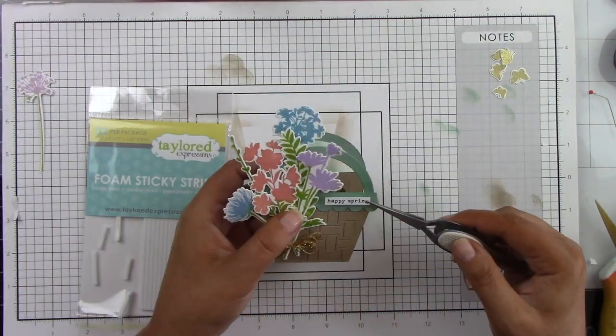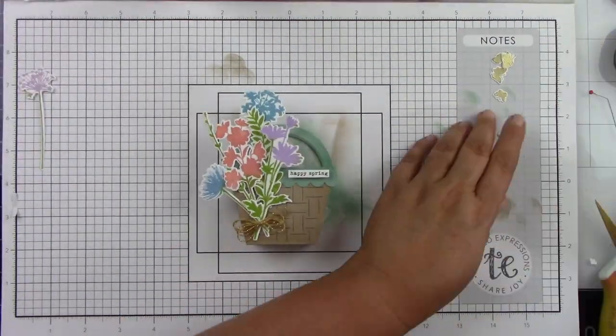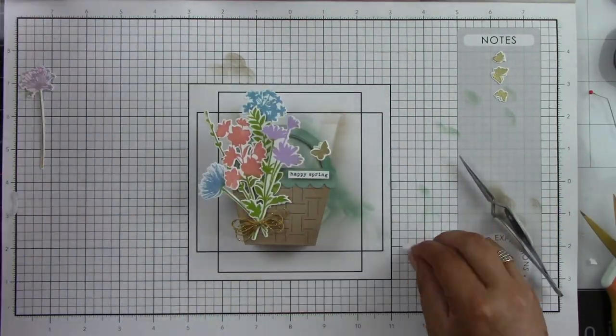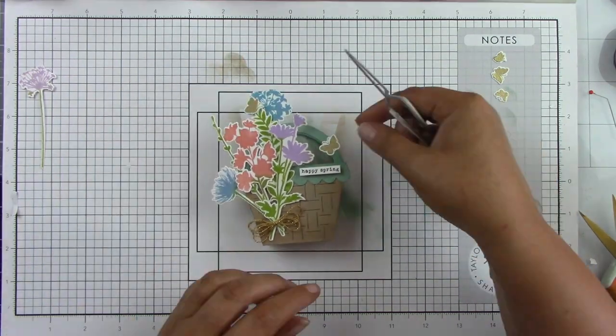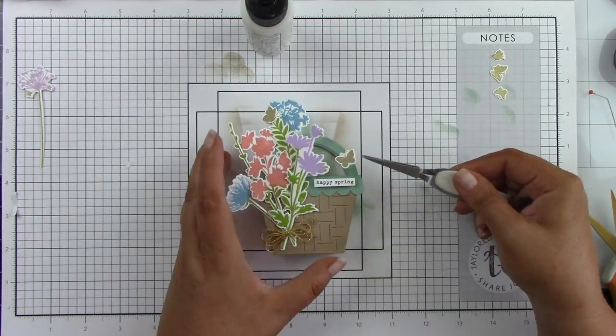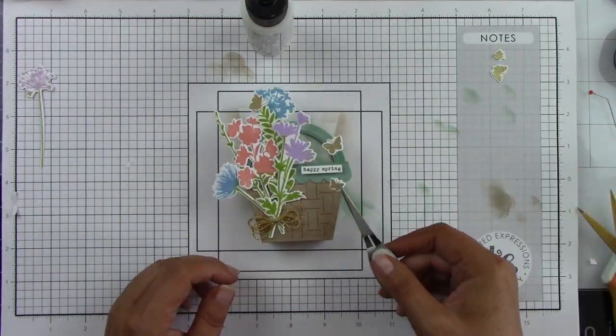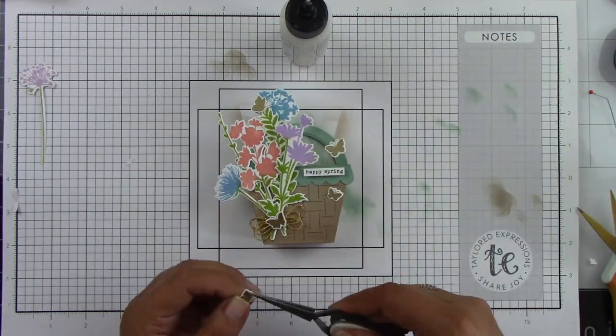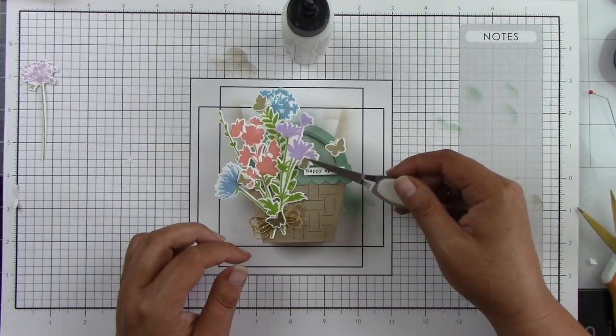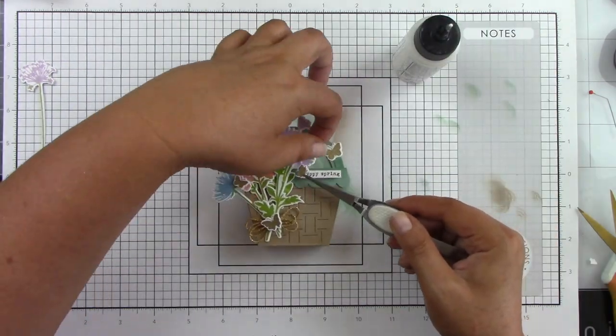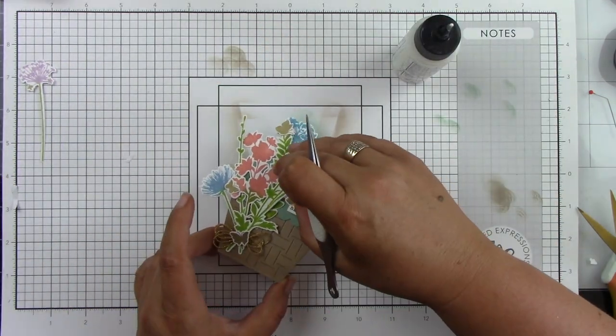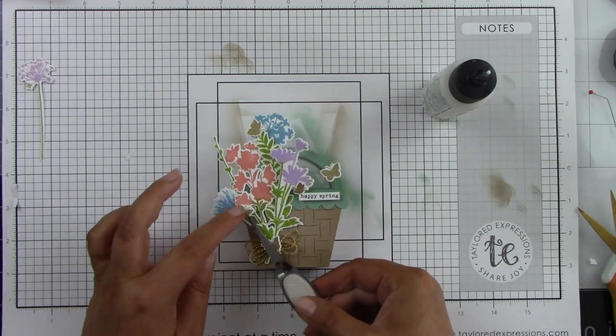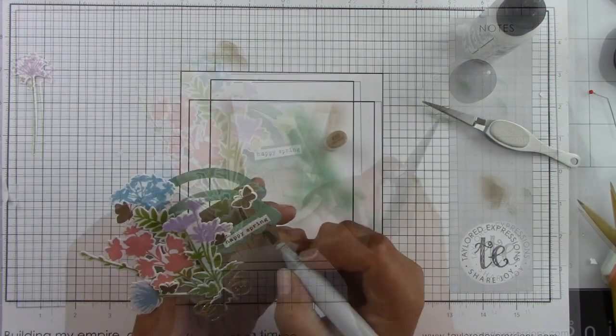Then I'm using some foam sticky strips behind that sentiment, placing that up there on the top. And then I'm coming in with those little gold butterflies. I thought the pop of gold would be really pretty and add something else to this card. Some of these are just going to be glued directly to the card, to the images, and then some of them have some foam tape behind it, some foam sticky strips. I just kind of trimmed those down a little bit small and then just added the butterflies all over this cute little basket.